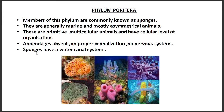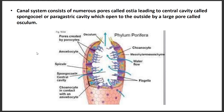Sponges have a water canal system. Their body has many pores called ostia. These ostia compose the body cavity known as the spongocoel or paragastric cavity, through which water enters. This cavity opens to the outside by a large pore called the osculum. So water enters through ostia and exits through the osculum.